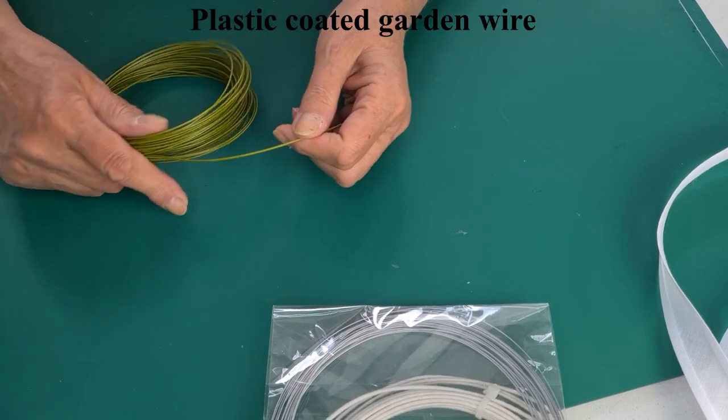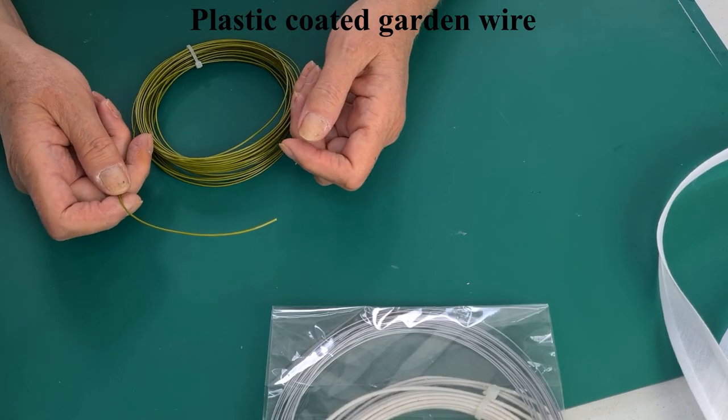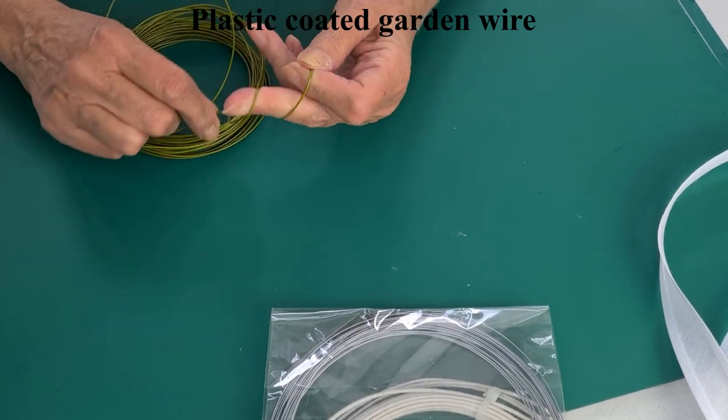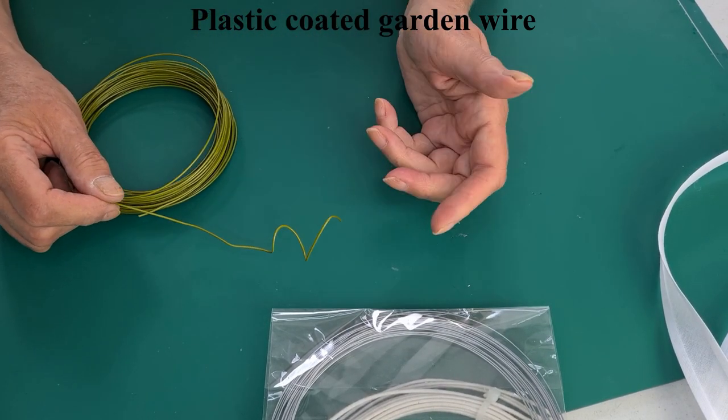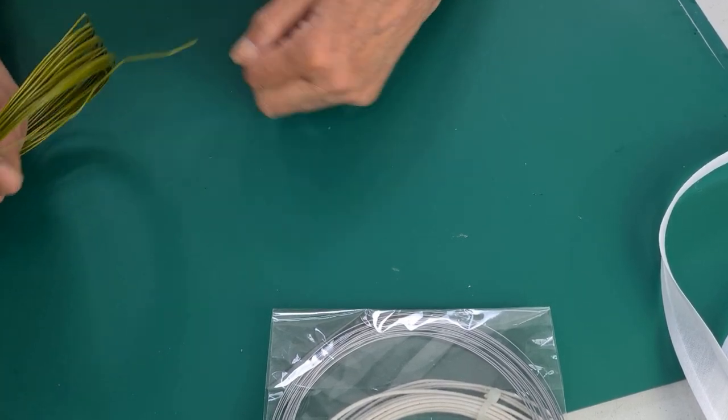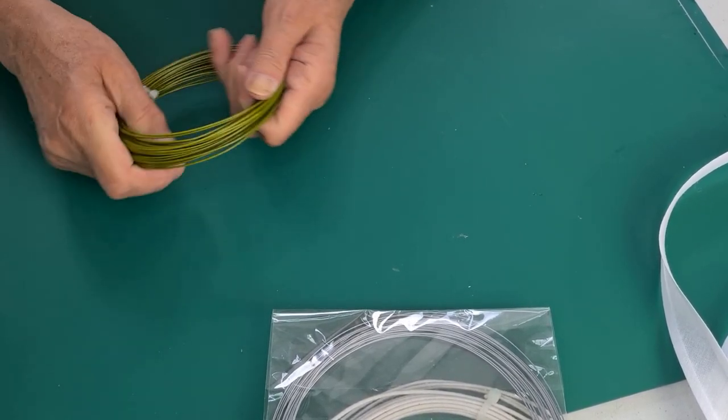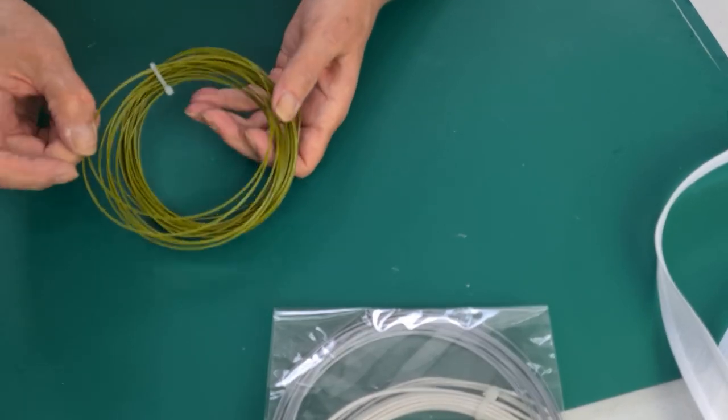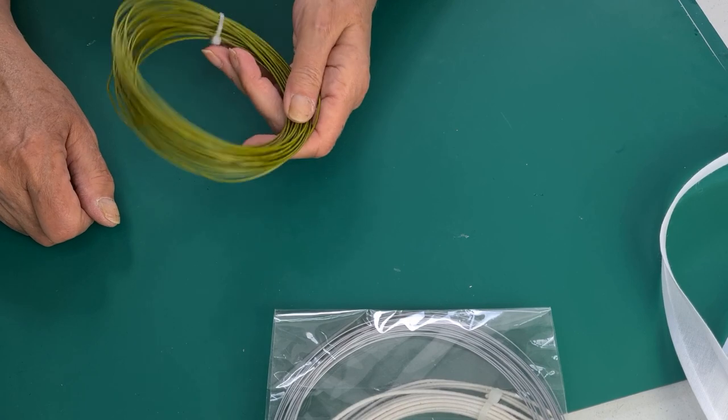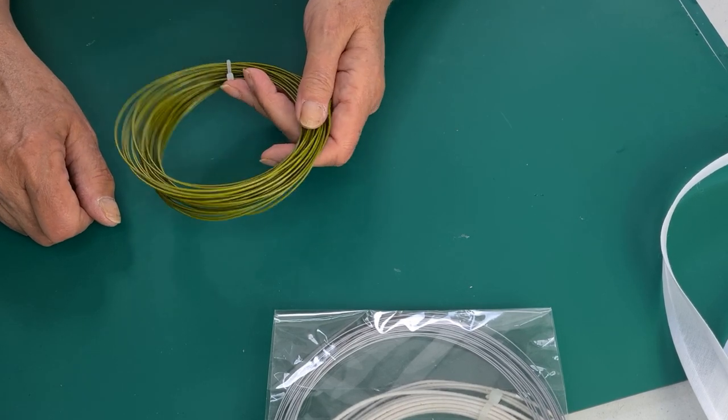Then you've got ordinary plastic covered garden wire. This is great if you want to do convoluted shapes or small hats where you want to be able to bend the brim. Of course, it's a cheap alternative to the others, but remember this won't keep its shape so well. And again, you need wire cutters.